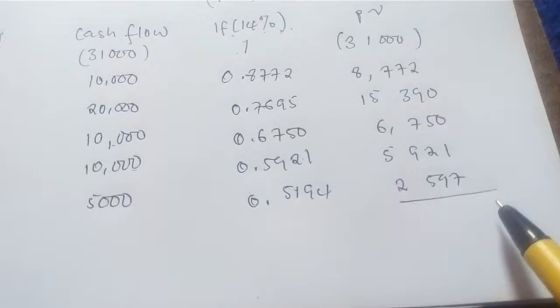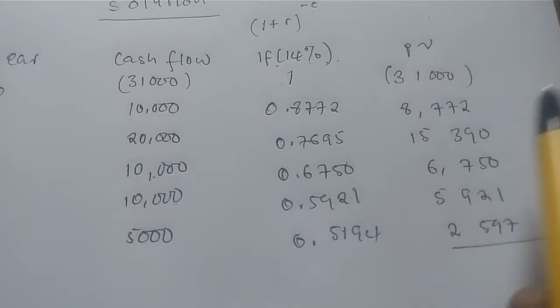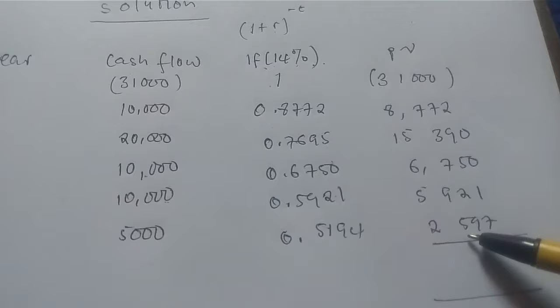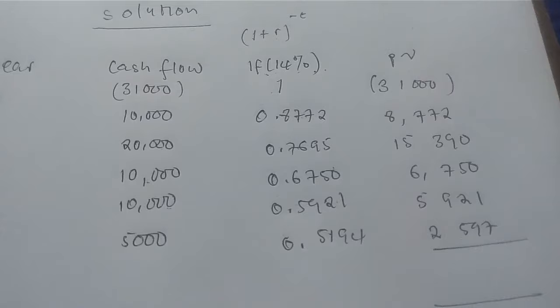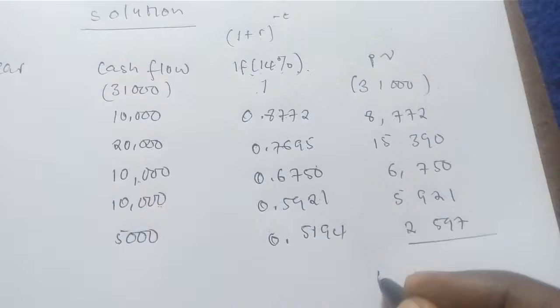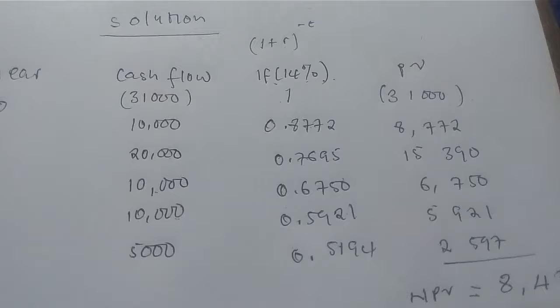The final step is to find the NPV. After multiplying the cash flows by their interest factors to get each present value, we simply add all the present values together. That means adding negative $31,000 plus $8,772, $15,390, $6,750, $5,921, and $2,597 — in other words, summing all present values and subtracting the initial investment of $31,000. Our net present value is found to be $8,430.